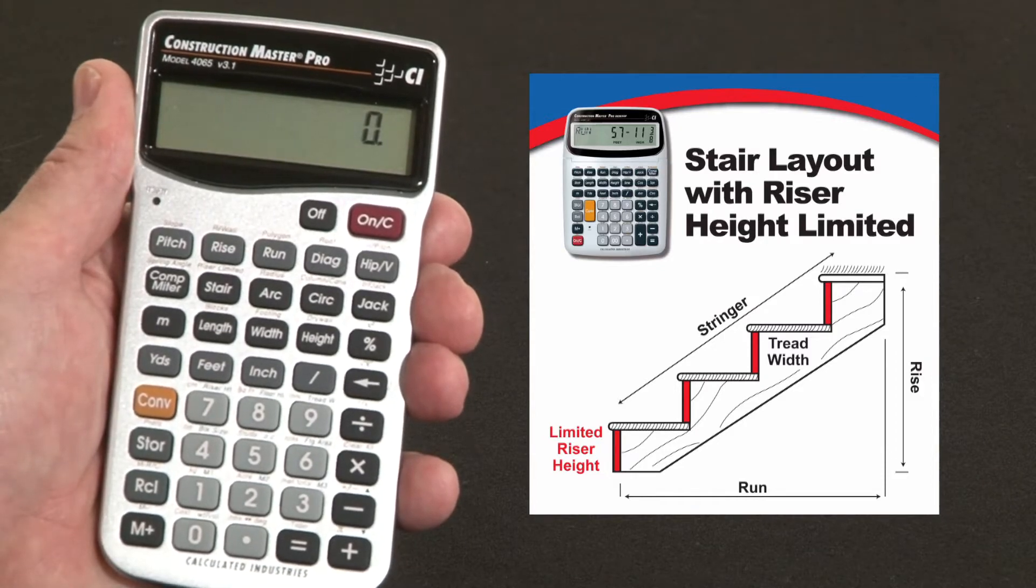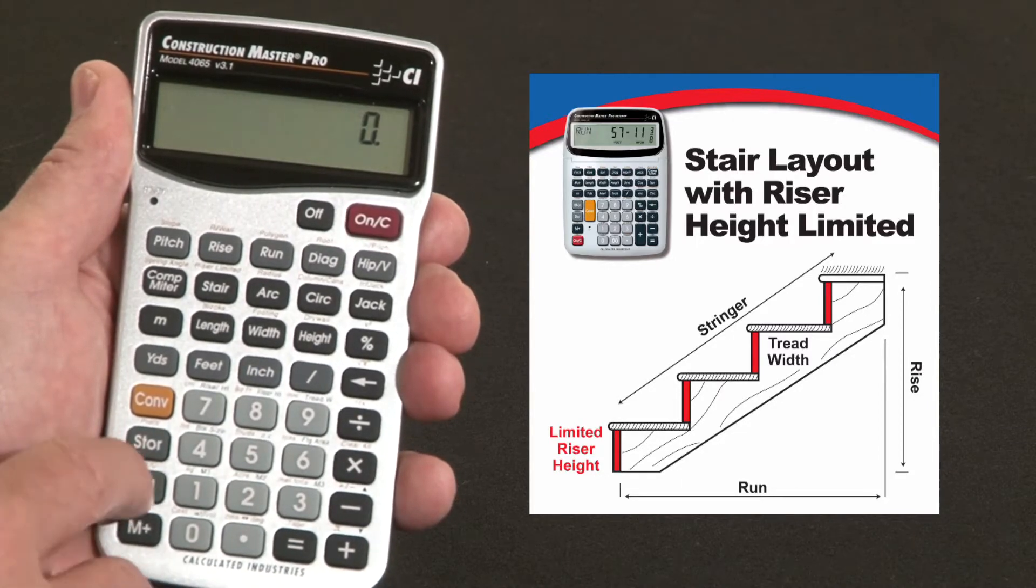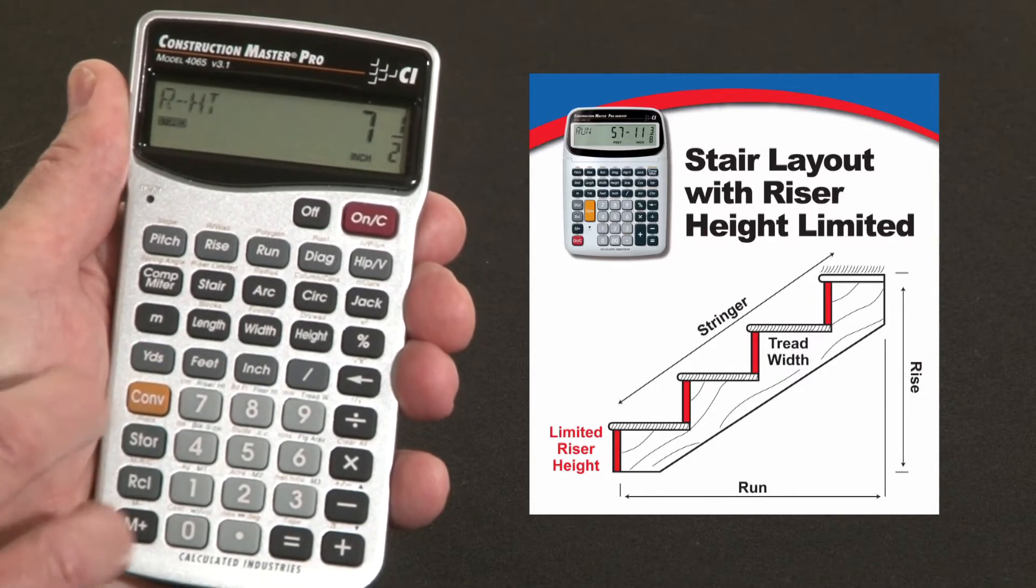Keep in mind the keystrokes for this example will be exactly the same if you're using our trig model or our desktop model. First, recall the default riser height is seven and a half inches. We'll leave that in there for this example, but we don't want to exceed that.